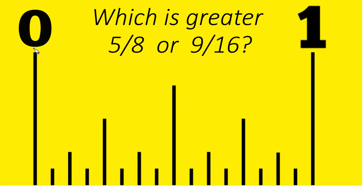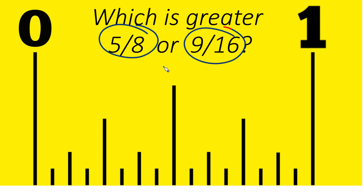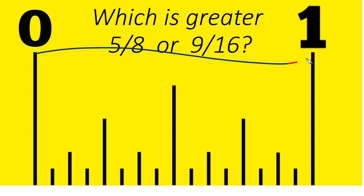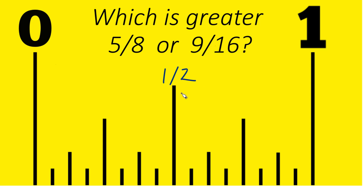Here's how you can figure out which is larger on your ruler or tape measure — 5 eighths of an inch or 9 sixteenths of an inch. This is one inch right here. Cut that in half and you have half of an inch. Cut that in half and that's a fourth of an inch, then an eighth of an inch. And when you cut an eighth of an inch in half, you get 1 sixteenth of an inch.